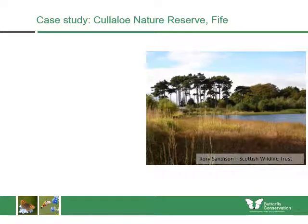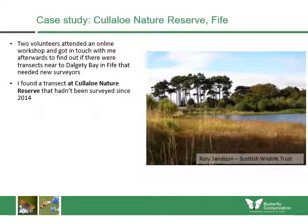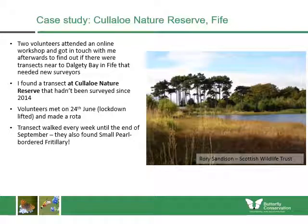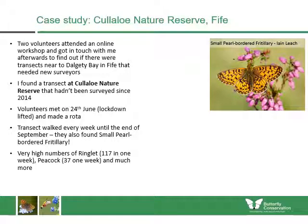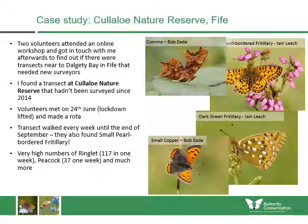As a case study, last year some volunteers attended an online training workshop and got in touch to find out if there were any transects near Dalgetty Bay in Fife needing new surveyors. I found a transect at Kalaolo Nature Reserve that hadn't been surveyed since 2014. I gave them the maps and routes, they met on 24th June, made a rota, and walked the transect every week until the end of September. They found small pearl-bordered fritillaries — a priority species for Scotland — as well as high numbers of ringlets, peacocks, commas, dark green fritillaries, and small coppers.